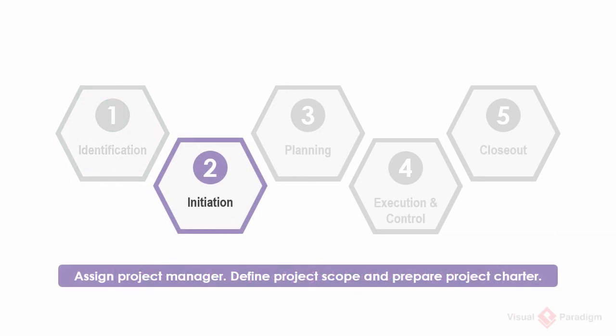The initiation phase begins with the performing organization appointing a project manager to lead the project team and manage the project. The project manager defines the project scope and develops the project charter, which will be approved by the approving authority and project sponsor. The signatures formally empower the project manager to expend resources on the project and begin the planning phase.